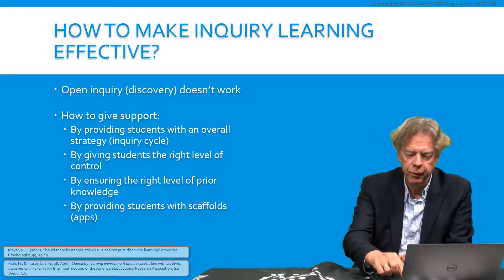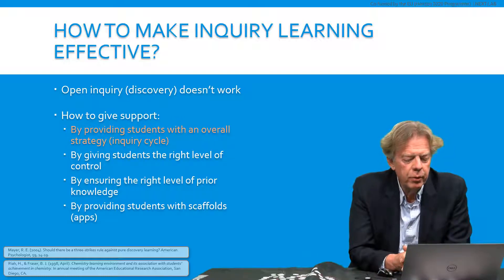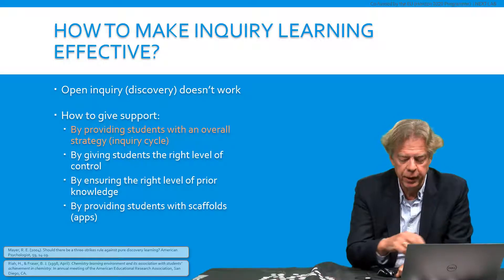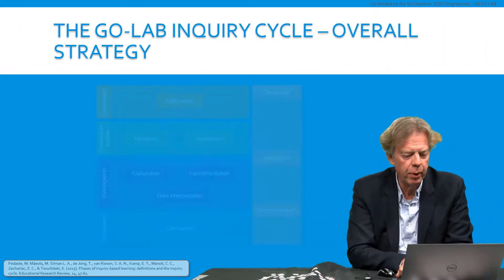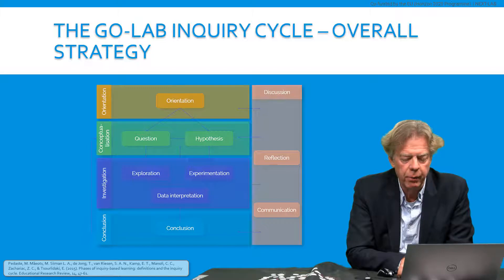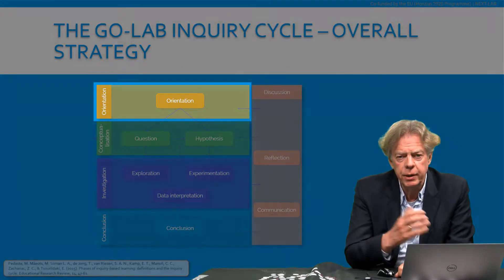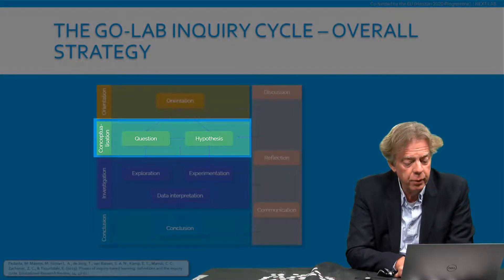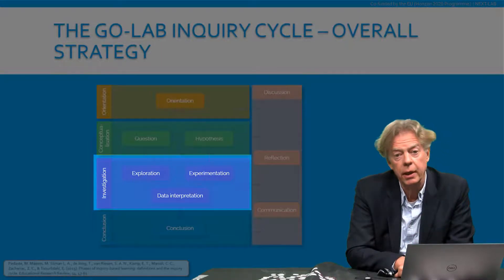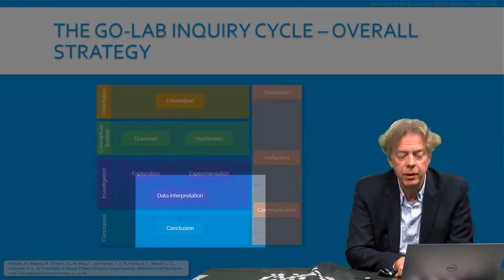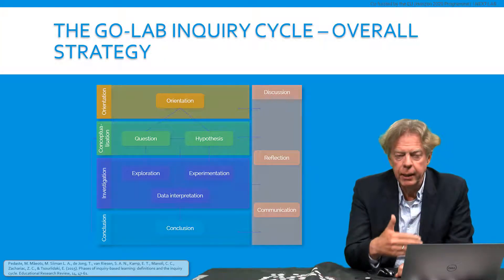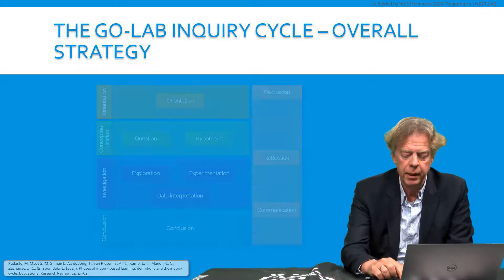If we want to give students an overall strategy, or inquiry cycle, you've already seen the steps that are part of the inquiry process. In GoLab, we created what we call the GoLab inquiry cycle. It starts with an orientation phase, in which students get a feeling for what's going on. Then they can design a question or a hypothesis. They do investigations through exploration or experimentation, get data they have to interpret, and on that basis draw a conclusion. The final two phases — communication and reflection — are shown to the right. Giving students this overall inquiry cycle already helps them significantly.